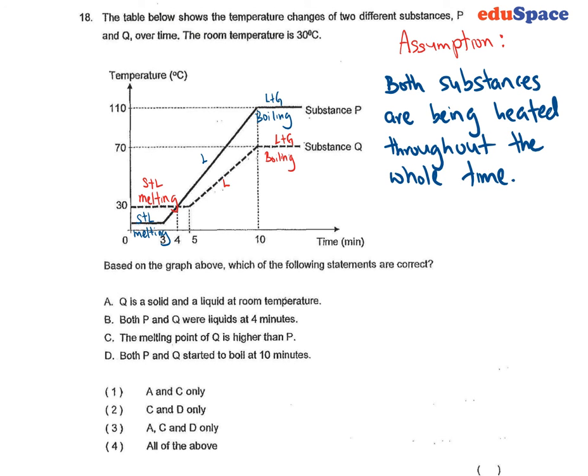So in this case, we could see that B is the only wrong option. So the rest of the options are correct. So answer is number 3, A, C and D.